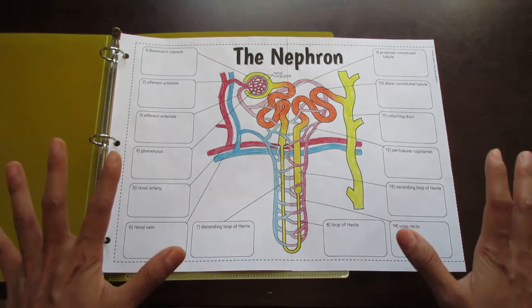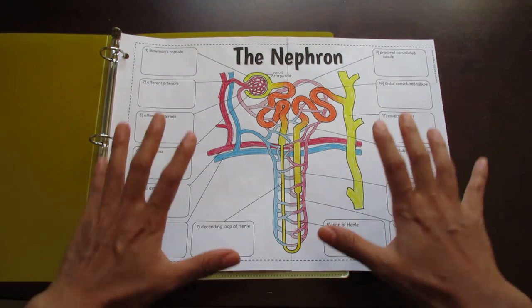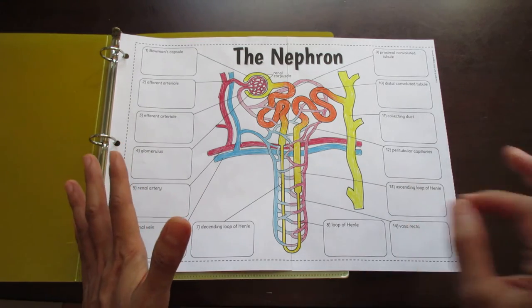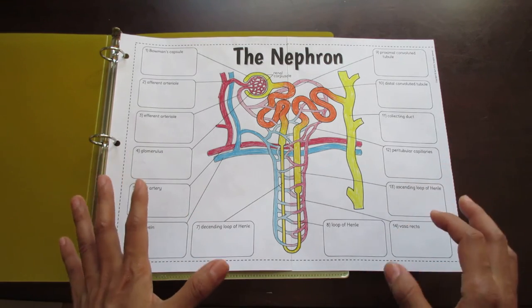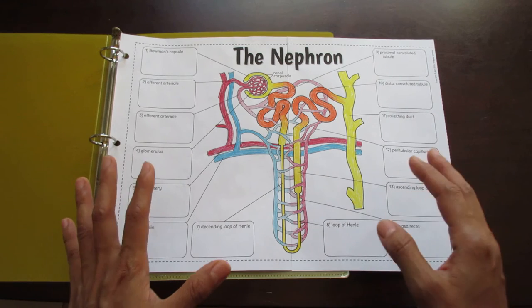This foldable makes things very easy. First of all the diagram is nice and big and easy to color. I would suggest that students color this because it helps them understand the different components better when they do.